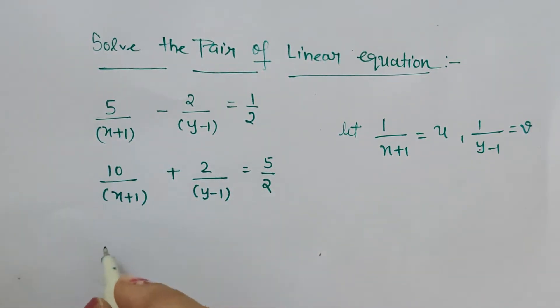Now this 5/(x+1) can be replaced with 5 times u, minus 2 times v, because 1/(y-1) has been assumed as v, which equals 1/2. And here this will be 10u + 2v = 5/2.